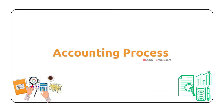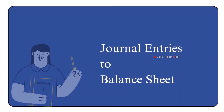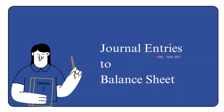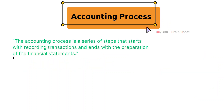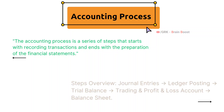In this video we will cover the overview of the accounting process, from recording journal entries to preparing the balance sheet. The accounting process is a series of steps that starts with recording transactions and ends with the preparation of financial statements. You can see the overview of the steps: first we record the journal entries, then we post into ledgers, from there we prepare the trial balance, and then comes the trading and profit and loss account.